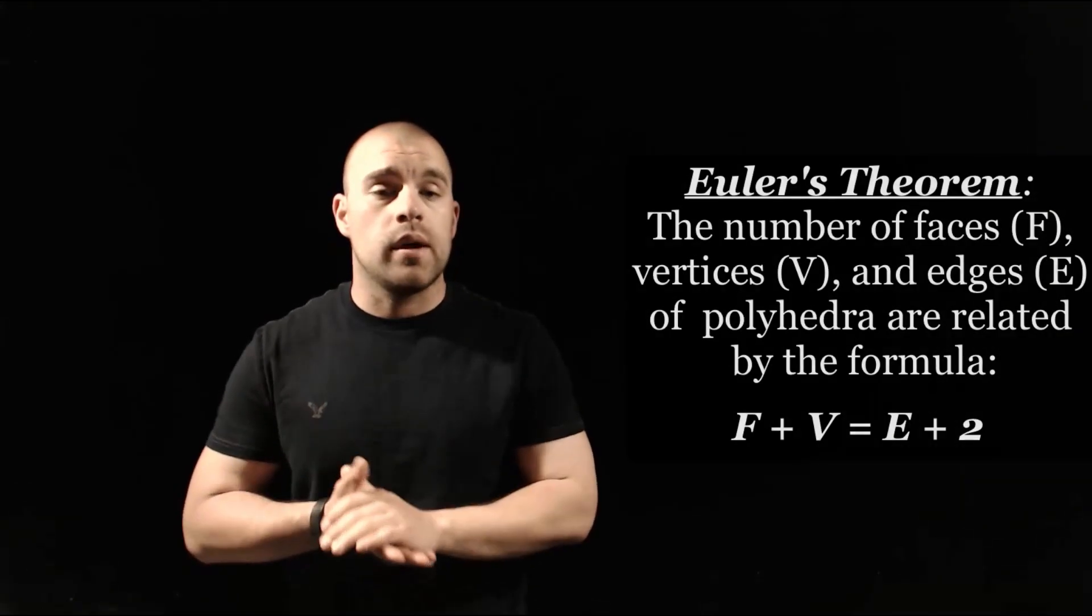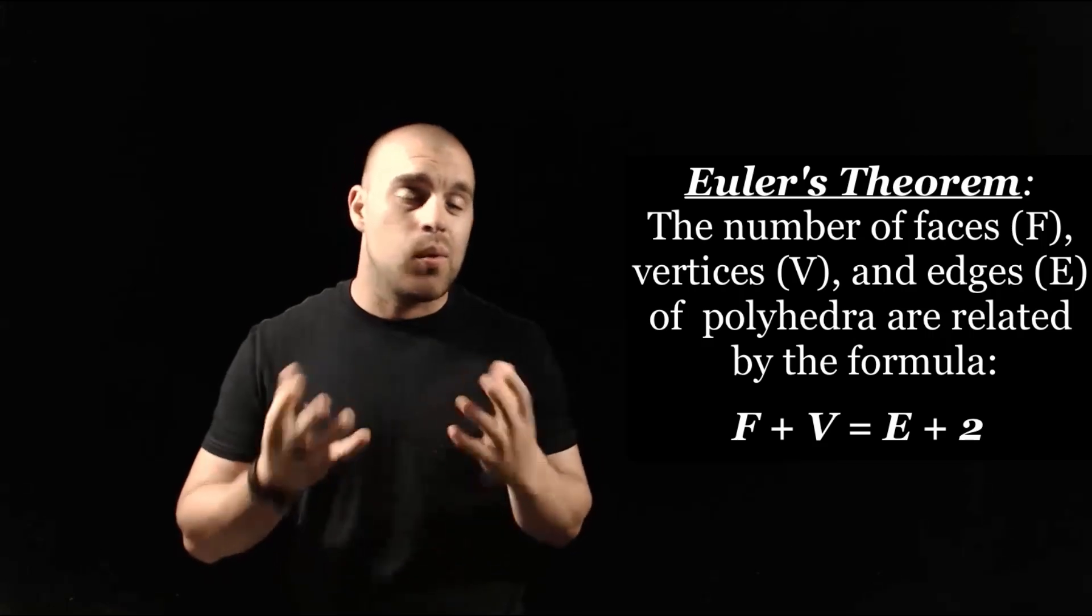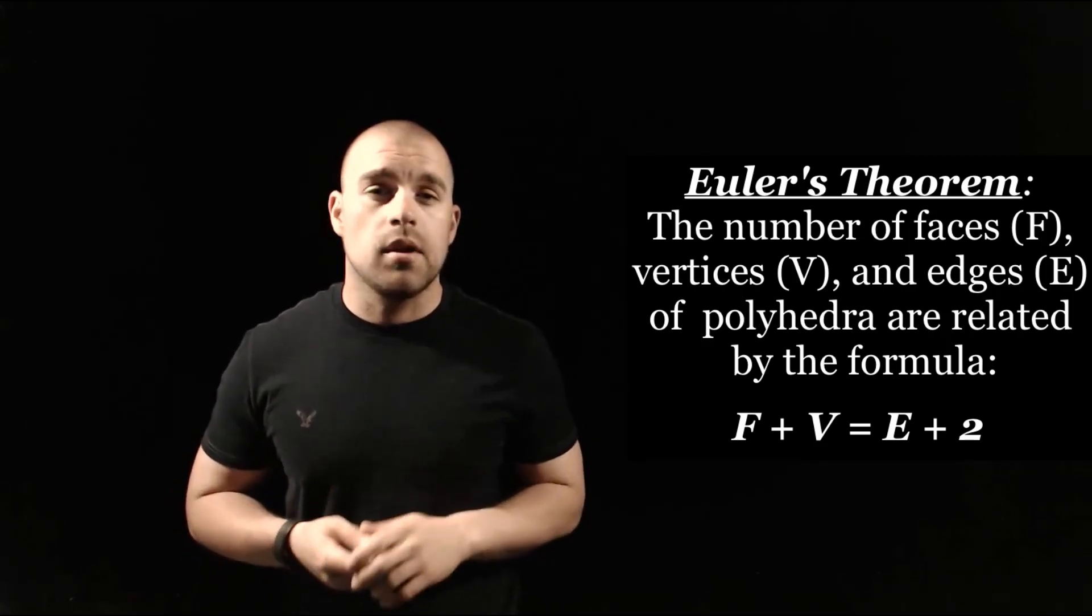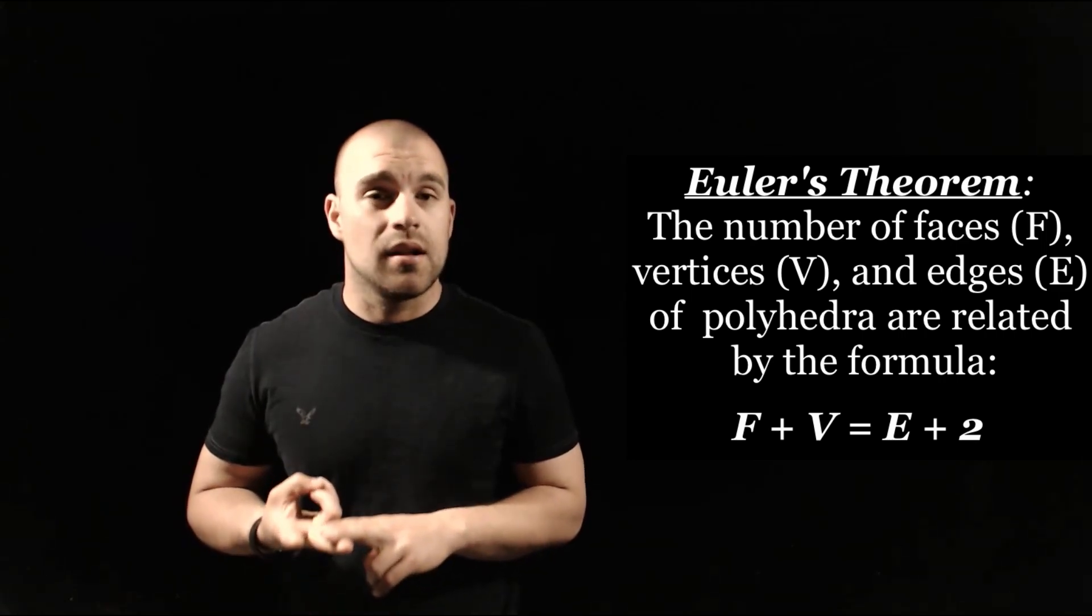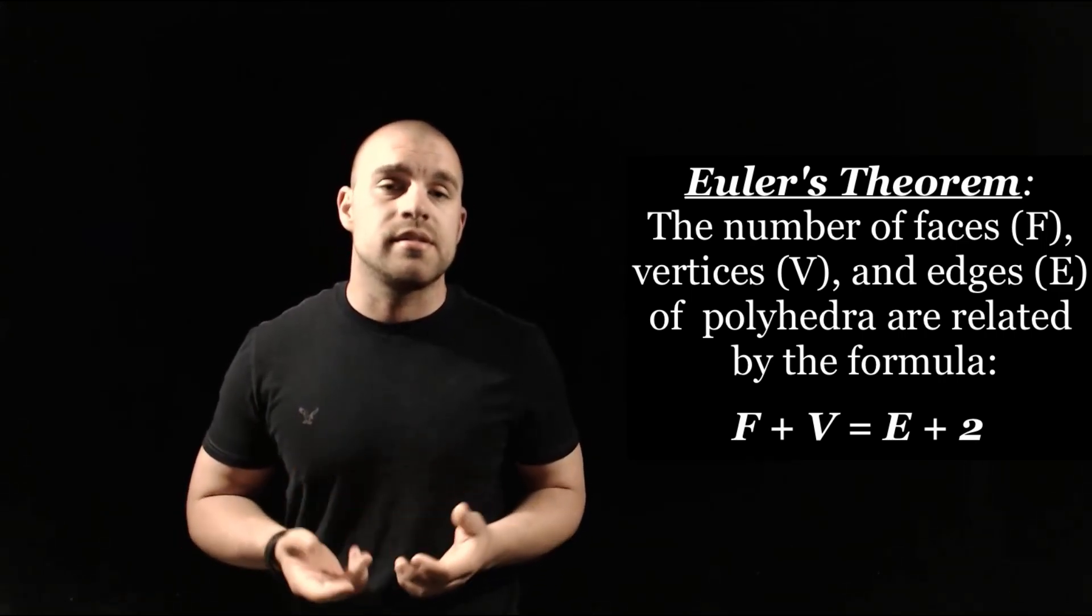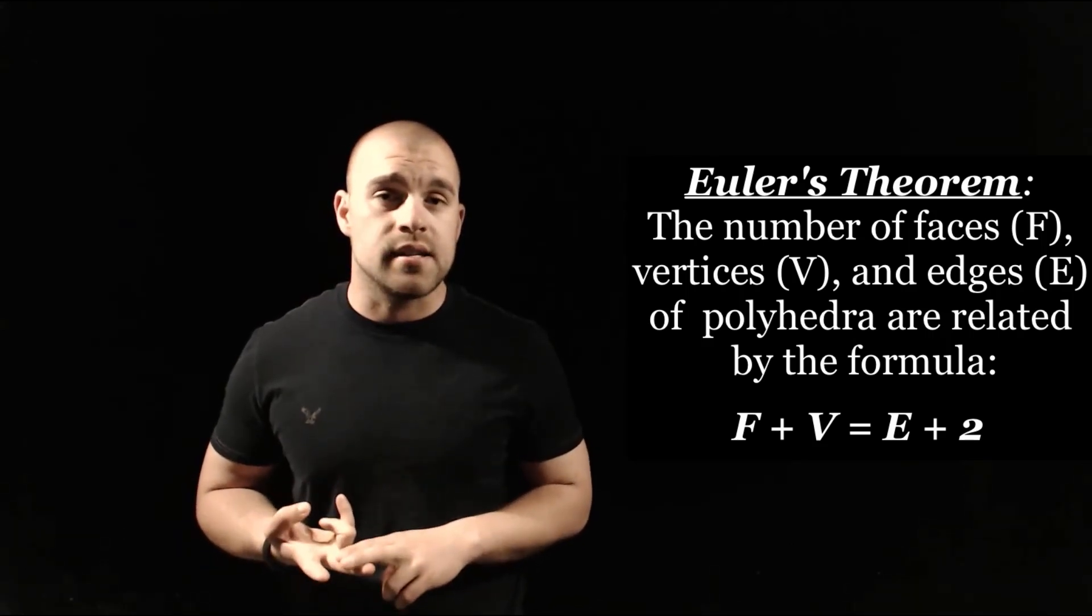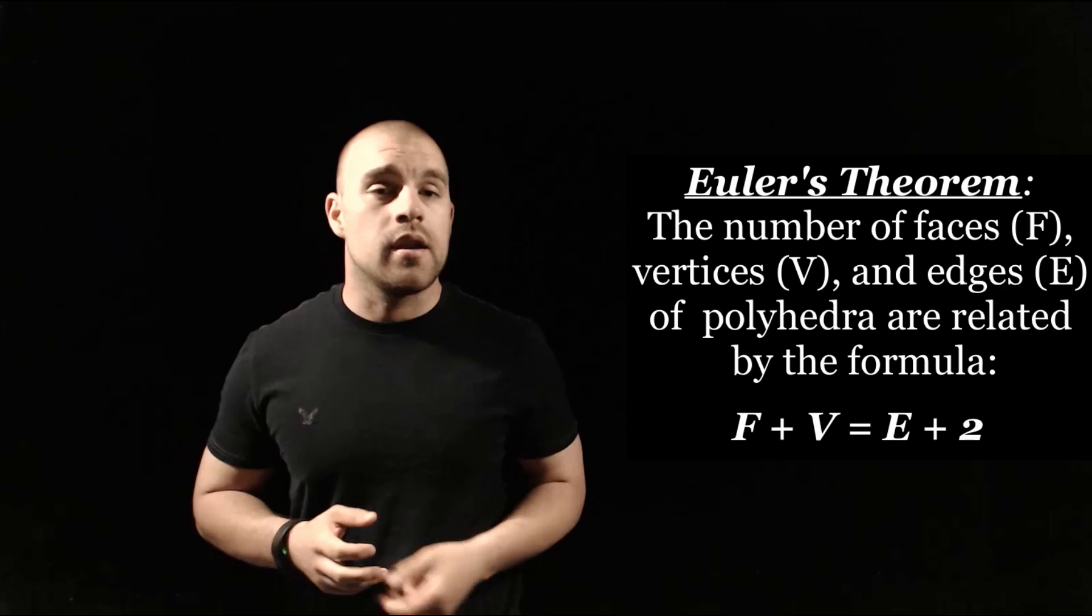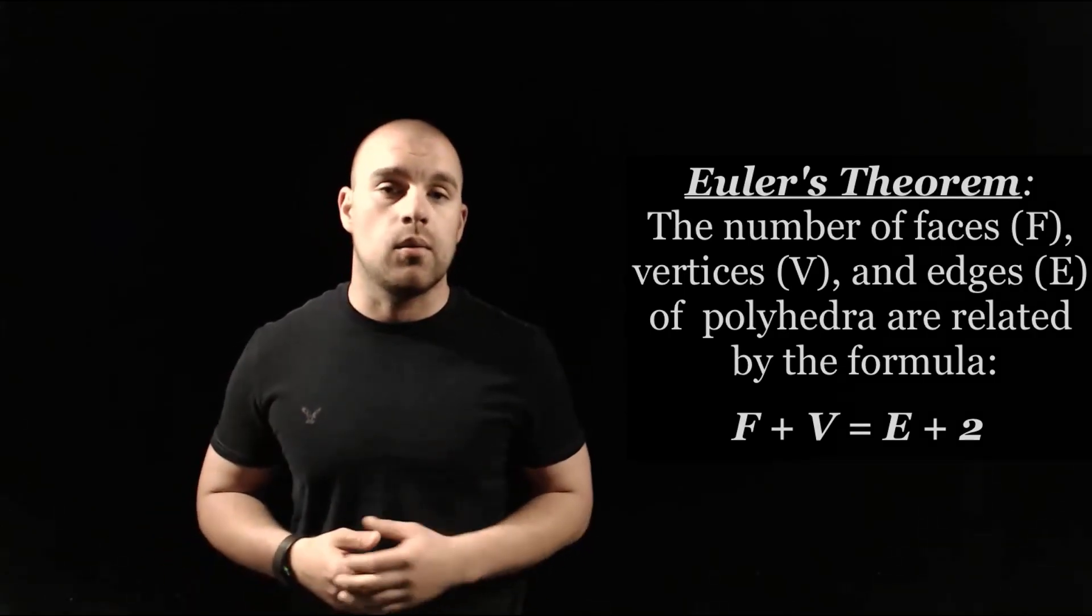As we're focusing on our different polyhedra, there's a formula that we can use to relate the number of faces, vertices, and edges within our polyhedra. This formula was proven and named after the Swiss mathematician Leonard Euler. So this is Euler's theorem. And what Euler's theorem says, if we take the number of faces plus the number of vertices, then that has to equal the number of edges plus two for any polyhedra that we're dealing with.